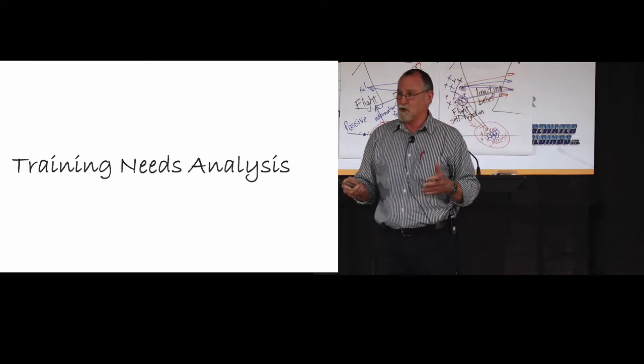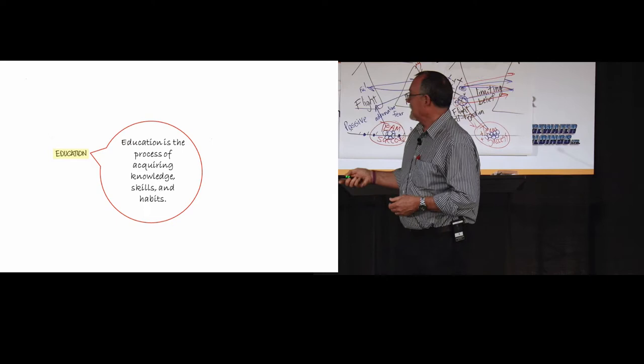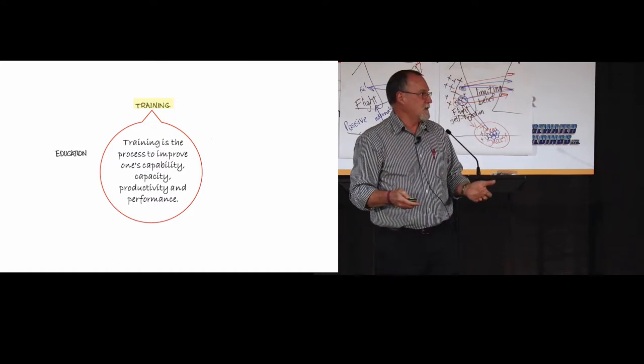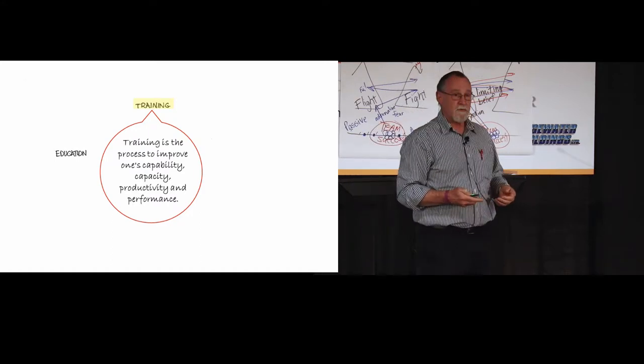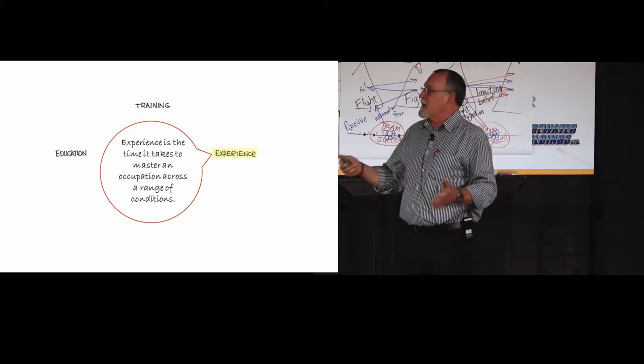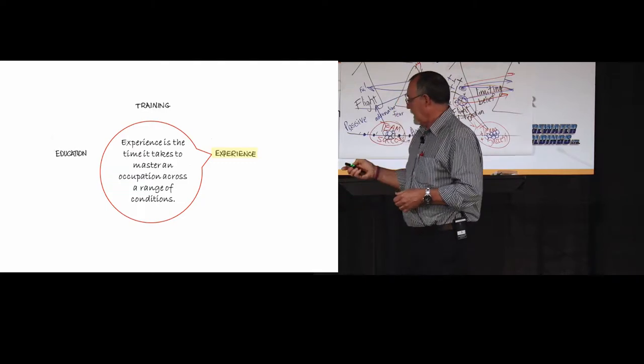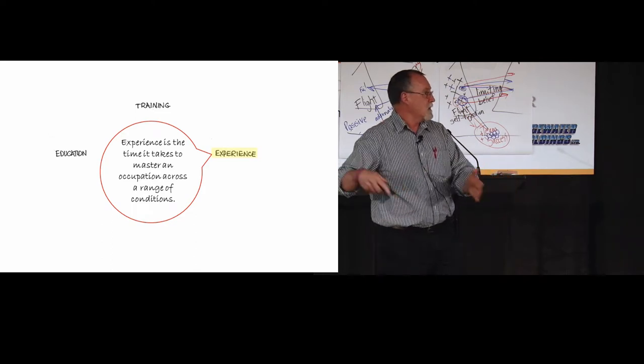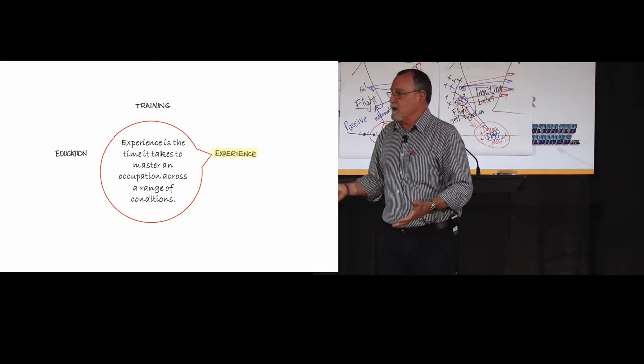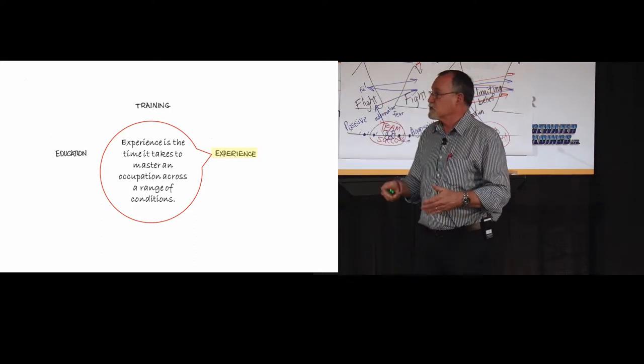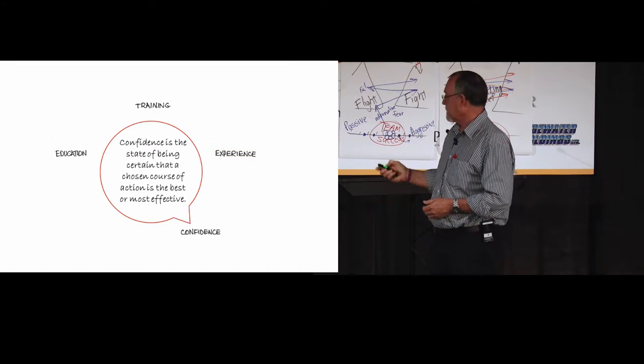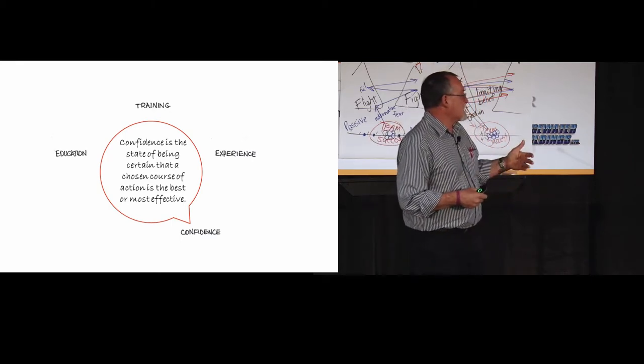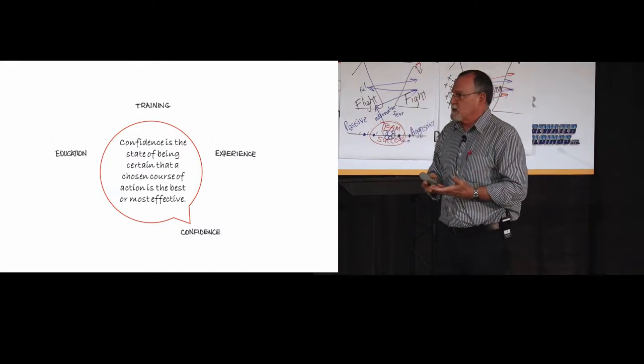Think of education. And again, you heard the humorous definition between education and training. Education is a process of acquiring that knowledge. Training is the process of improving one's capability and capacity to do the job. Experience is also a very important component. This is a time it takes to master the occupation. And that's under a range of conditions. So if you're training a log truck driver, you don't teach them over the summer and qualify them over the summer, because now they start driving under winter conditions, very different parameters. So training across a range of conditions to develop those skills and competencies over time. The other piece I want to introduce is confidence. So this is the person's state of mind, the state of being. The actions they choose are the right ones for the job.